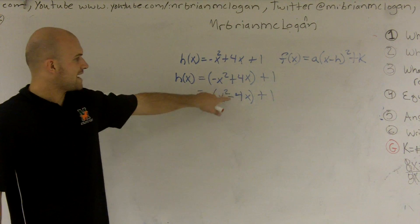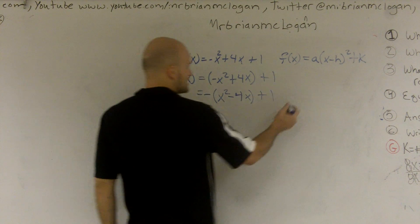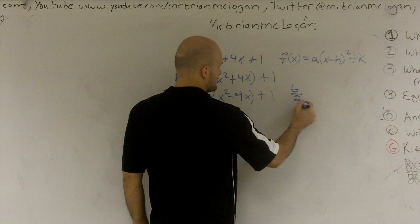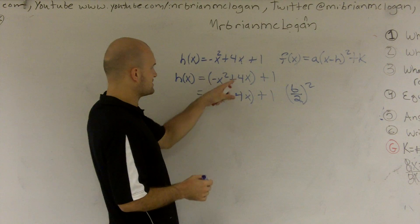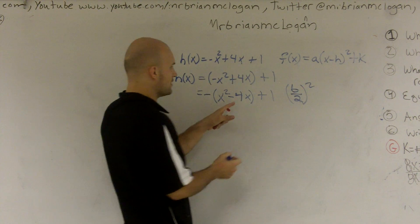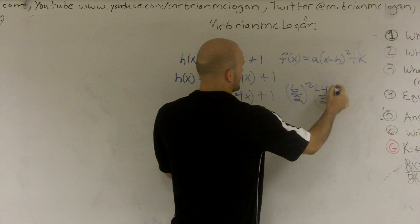So now what I need to do is I need to make this into a perfect square trinomial. So what we do is we say b over 2 squared. So my b is a negative 4 over 2 and squared.